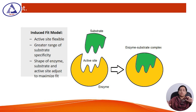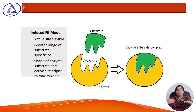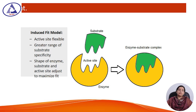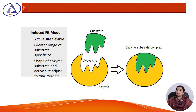The other theory is the induced fit model. In this model, the active site is flexible, there is a greater range of substrate specificity, and the shape of the enzyme, substrate, and active site adjust to maximize enzyme activity. For example, glucokinase can only bind with glucose, but hexokinase can bind with all hexoses like glucose, fructose, and galactose.